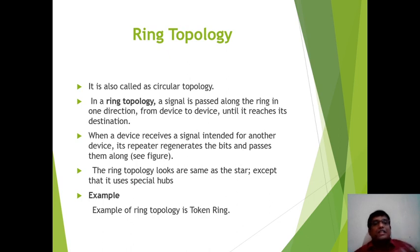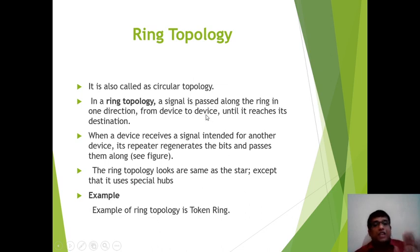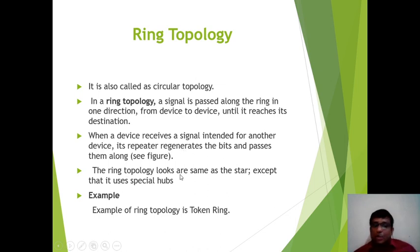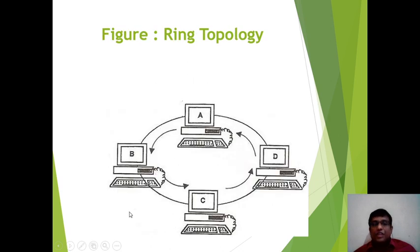Now we are discussing Ring Topology. As the name implies, it is also called circular topology. In a ring topology, a signal is passed along the ring in one direction from device to device. It does not need any hub or reactor. When a device receives a signal intended for another device, its repeater regenerates the bits and passes them along. Example of ring topology is Token Ring — in the diagram, four terminals are connected with no hub.